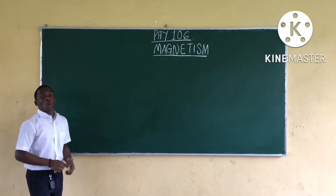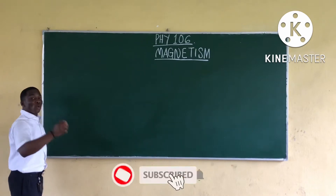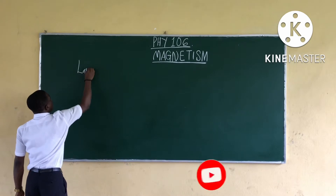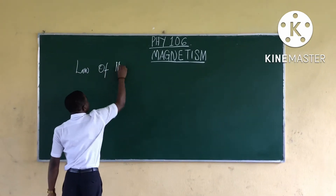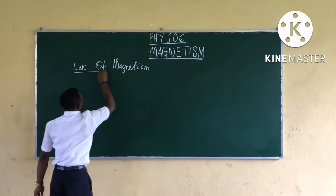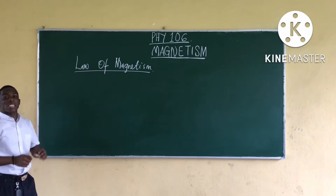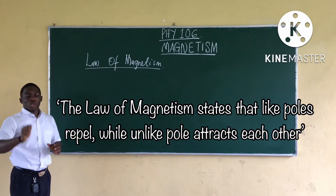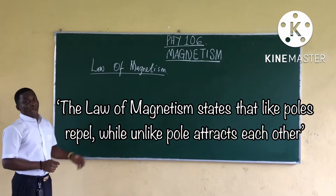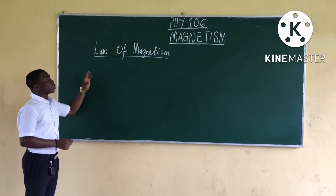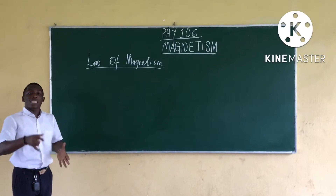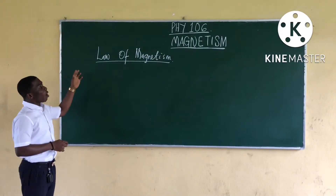Under Magnetism, we will be looking at a very important law called the Law of Magnetism. The Law of Magnetism is a natural law, and it states that like poles repel and unlike poles attract. It is called a natural law because it happens in nature.